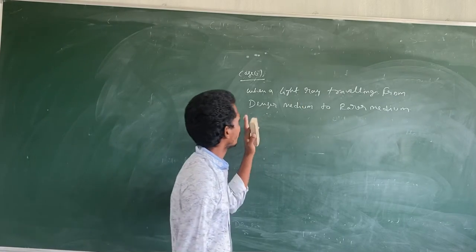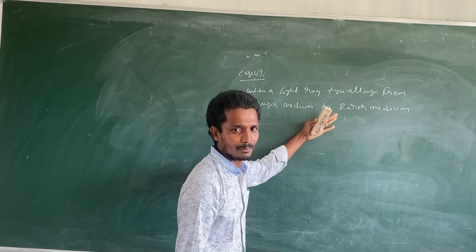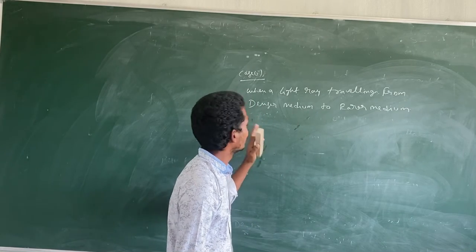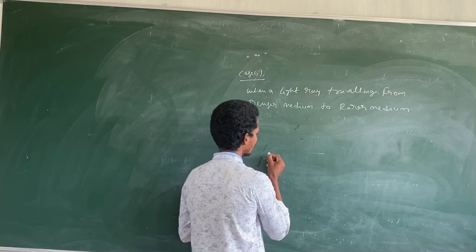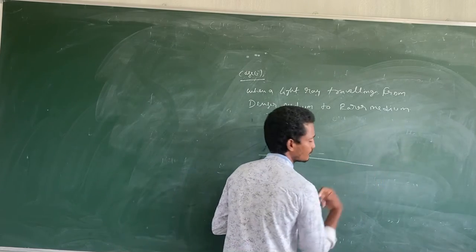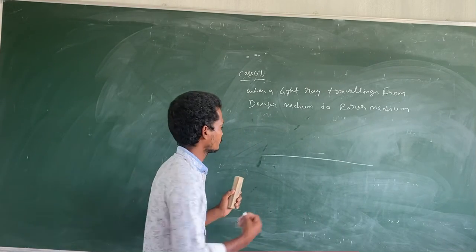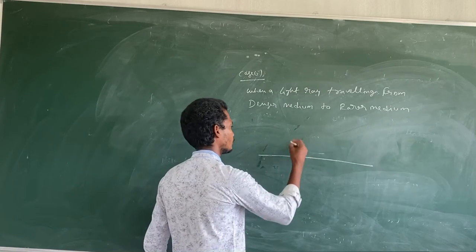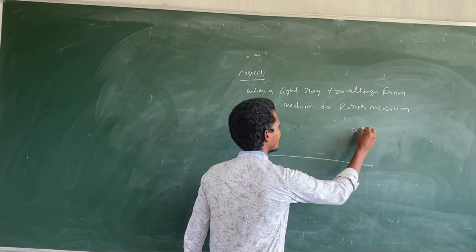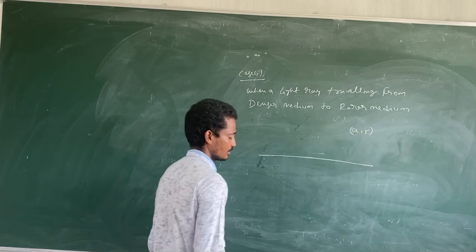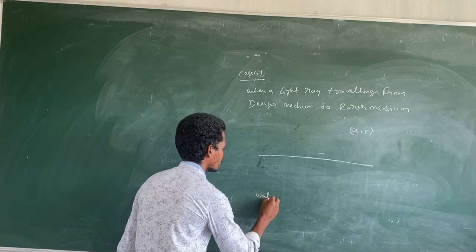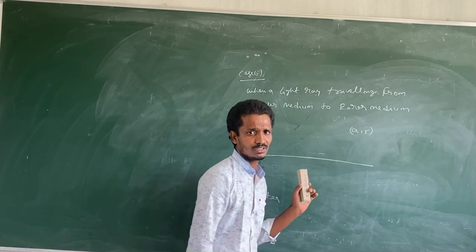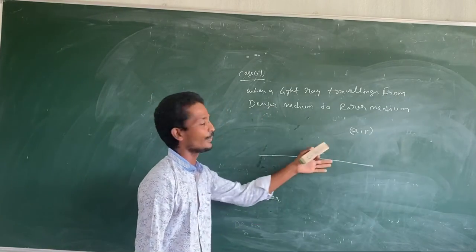When light is traveling from the denser medium to the rarer medium, here what has happened? This is the most important concept. First of all, take the surface. This is the air medium. This is the water. These are the examples for the mediums.